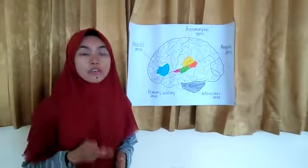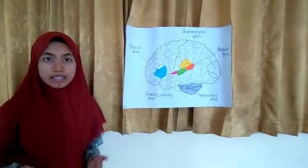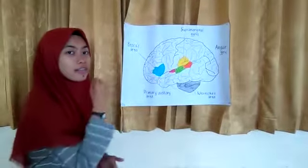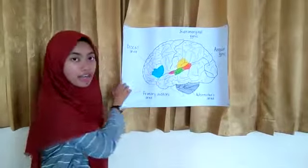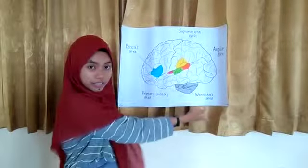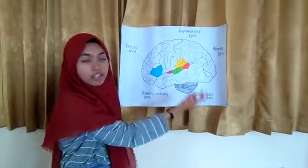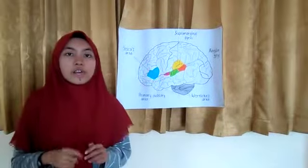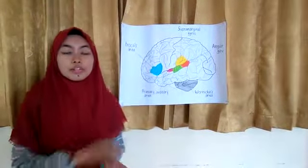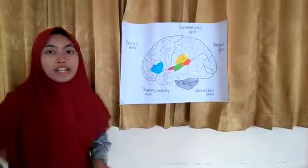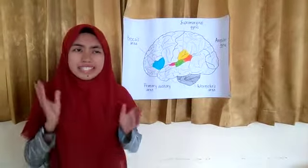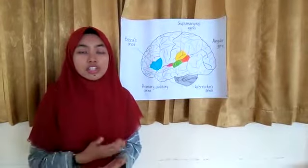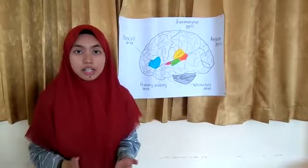There are three parts of the language center. What are they? The first is Broca's area, the second is Wernicke's area, and the third is the angular gyrus. The first thing we would like to explain more deeply is Broca's area — what exactly is the definition and function of Broca's area?